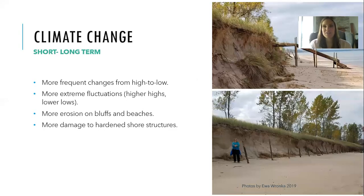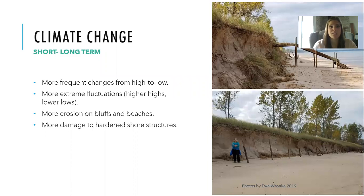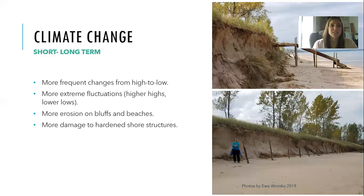Climate change has both short and long-term effects on lake levels. Looking at that long-term graph, we usually experience a high to a low every three to seven years. With climate change, that might become more frequent or more infrequent, and we would expect more extreme fluctuations — higher highs and lower lows. With these highs and lows, we would experience more erosion on bluffs and beaches, and also more damage to our hard structures and municipal infrastructure.